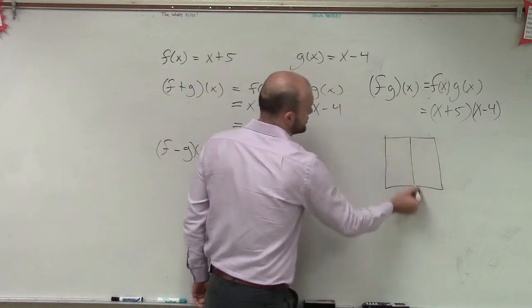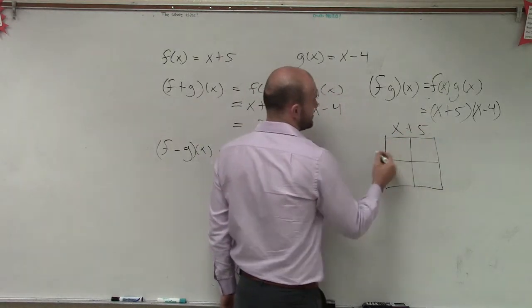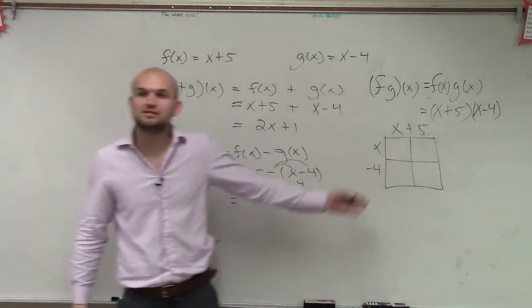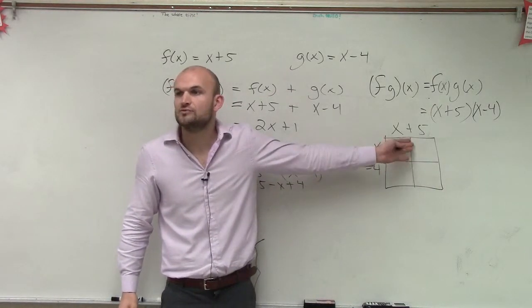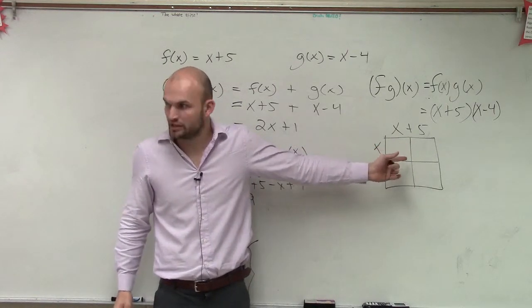I like to use the box to keep everything organized. So I put one binomial on top and one binomial on the side. And what that allows me to do is this is going to be like the height and width of each one of my boxes. Now, what I'm simply going to do is multiply by the area of each box.